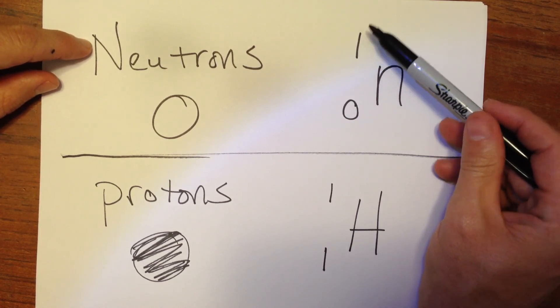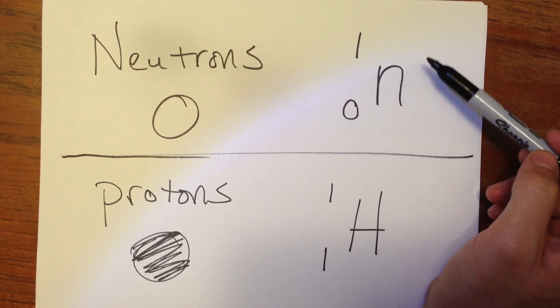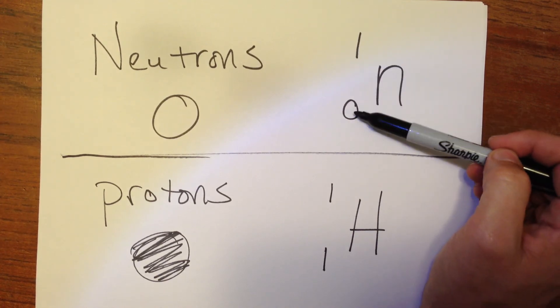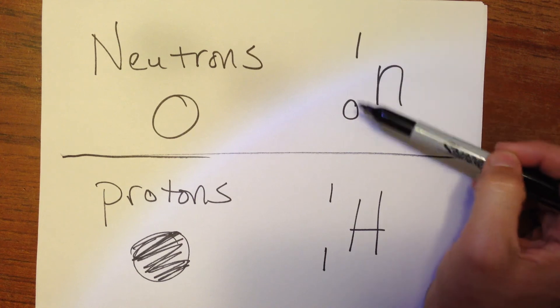And the top number is the mass. This is the same as we did with those chemical symbols before. The mass of 1, no protons, so that would be the neutron symbol.